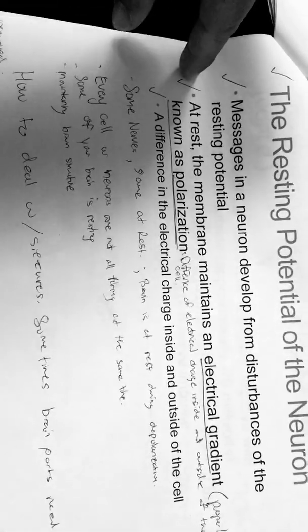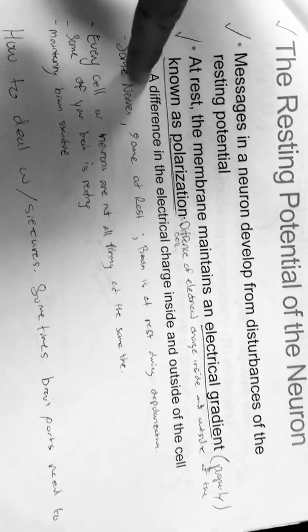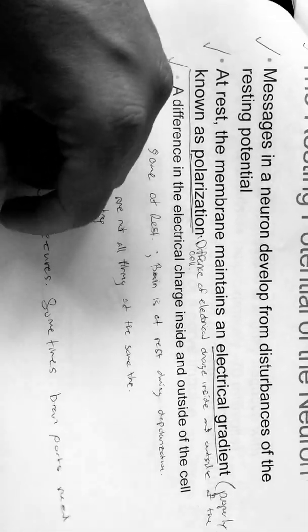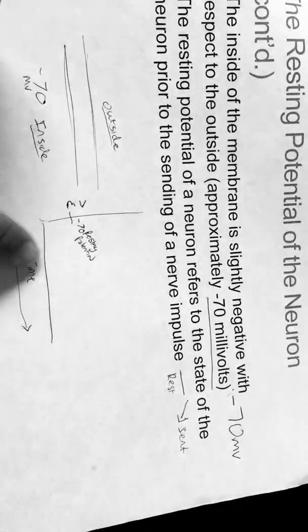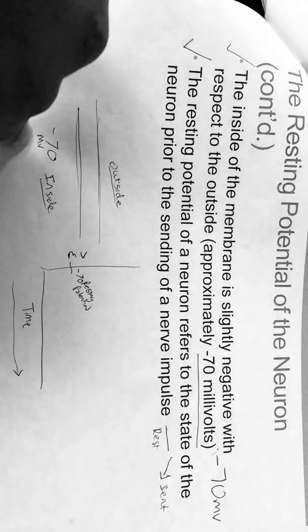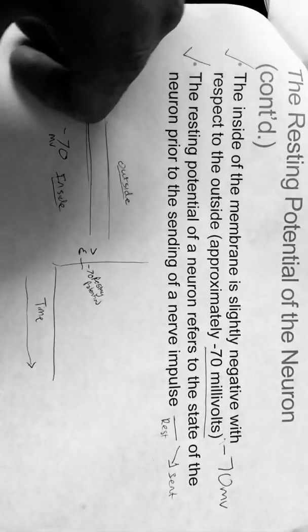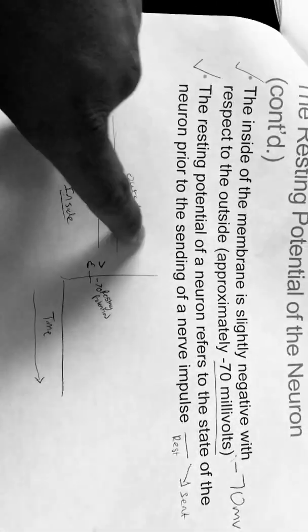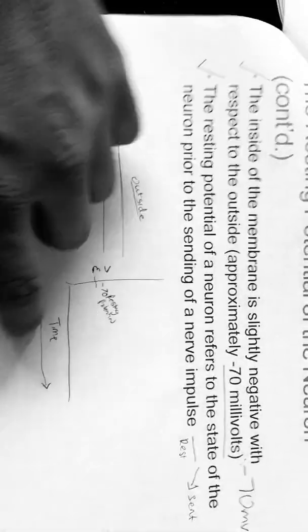At rest, the membrane maintains an electrical gradient known as polarization. You have the negative 70 millivolt level—this is where your resting potential sits. All it takes is one specific hit and it can set off the entire action potential and create a charge. Anything could vary under these instances, and you could be completely wired or at rest.